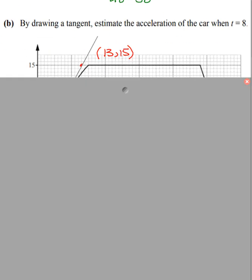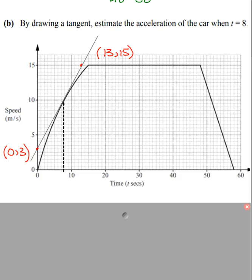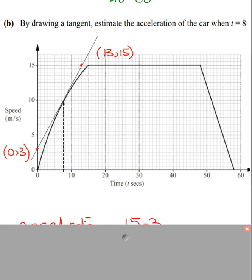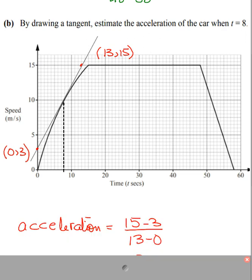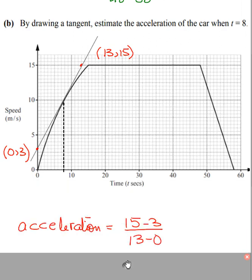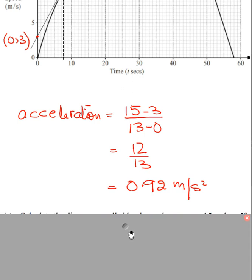Part two: by drawing a tangent, find the acceleration of the car at t = 8. At 8 seconds, go and check the point on the curve and draw the tangent there. On the tangent, put two points which you can read easily. Apply the gradient formula. That gradient of the tangent gives you the acceleration on the curve at t = 8. You get acceleration 0.92 meters per second squared.